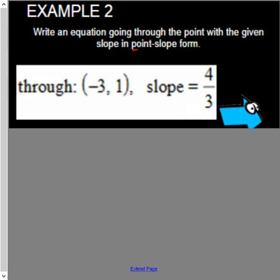We need to write this in point slope form. We start off with y minus y1 equals m times x minus x1, where x1, y1, and m are our known values.